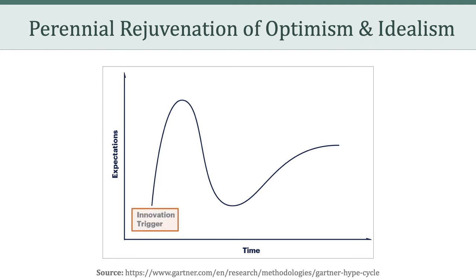The first phase is the innovation trigger. This happens when a potential technology breakthrough kicks things off — perhaps an early proof of concept — and media stories begin to trigger significant publicity. At this point, there are no usable products or commercial viability. Everything is really just prototypes, and viability is largely unproven.